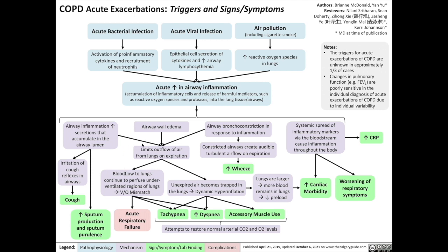Increased secretions also work alongside edema of the airway wall as well as airway bronchoconstriction in response to inflammation to limit the outflow of air from the lungs on expiration. Because blood flow to the lungs continues to perfuse the lungs, they are now perfusing underventilated regions, resulting in a VQ mismatch — a ventilation-perfusion mismatch.